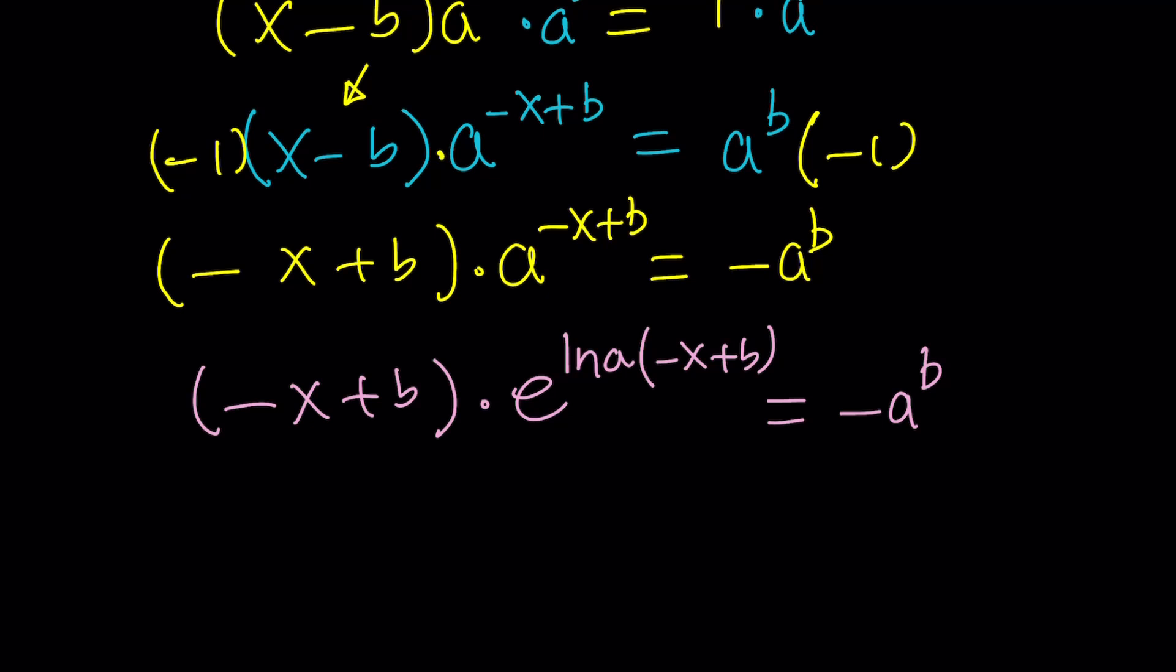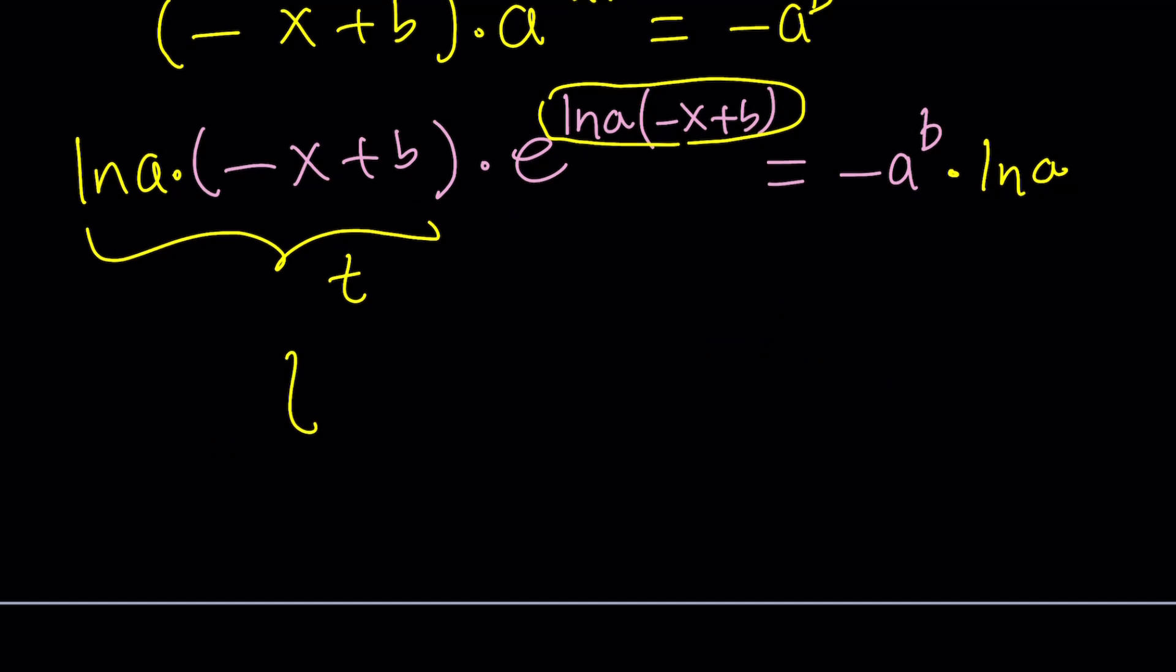And the next step is going to be one more thing we need to do. Notice that here the exponent changed because I had to turn it into an e base. But I don't have the ln a here. That's easy. Just multiply both sides by ln a and you're going to be good. Awesome. Now here's what we have. We have ln a times negative x plus b times e to the power ln a times negative x plus b. In other words, if I call this whole thing t, I have t e to the t. Awesome. Guess what we're going to do? We're going to apply Lambert's W function. And when this Lambert's W function acts on t e to the t, it's going to produce t from it. In other words, it's the inverse function for t e to the t. Make sense?